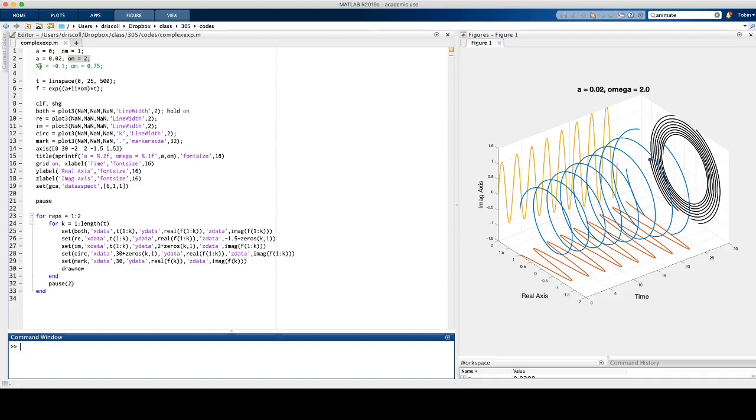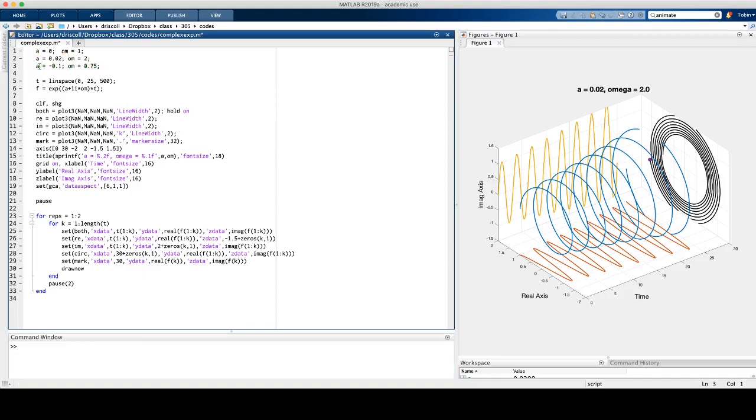Alright, one more case. Now I'll choose a negative real part, so that means the magnitude will be like e to the minus 0.1t, so it will decay. And then ω is a bit smaller than we started with, so it will go around more slowly with a lower frequency.